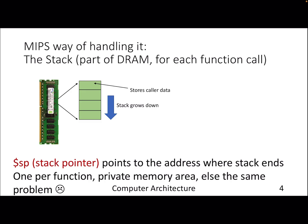The MIPS way of handling this is something called a stack. The stack is nothing but a part of data memory — you can assume a few KBs of space, just as an example. This stack space will be private per function call, otherwise the problem still remains the same: irrespective of whether we use registers or memory, unless we make it private to a particular function call, the register content will get overwritten, as we saw in the previous lecture.